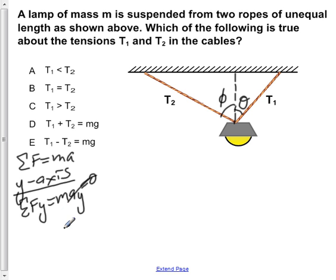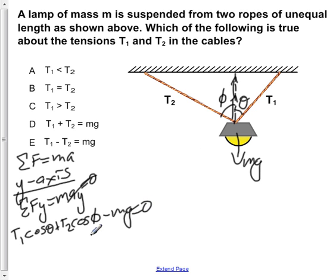If we now apply SOH CAH TOA to each of the tensions and also take into account the weight, we would show that T1 cos theta plus T2 cos phi minus mg (because the weight is directed downward, whereas both of the components of the tensions are directed upwards) equals zero. So here we've shown T1 cos theta plus T2 cos phi equals mg.